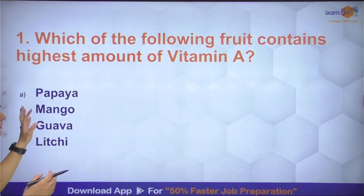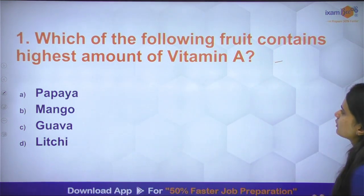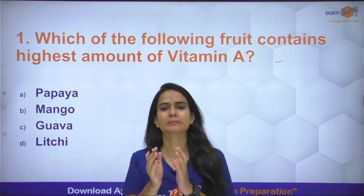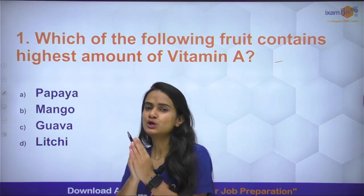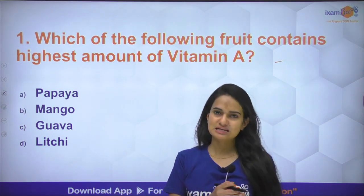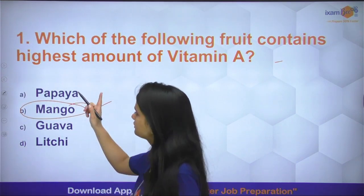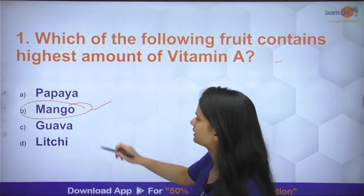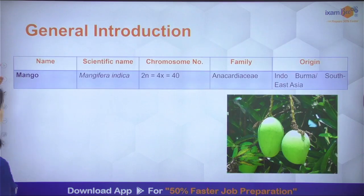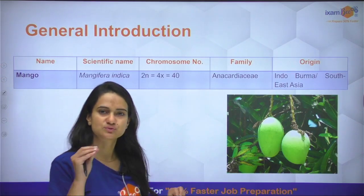Start करते हैं with the first question: which of the following fruit contains the highest amount of Vitamin A? Vitamin A का content सबसे ज्यादा उस fruit में पाया जाता है जो king of fruits कहलाता है, that is mango. Second number पर आता है papaya। यह हमने अपनी video lecture series में भी पढ़ा था।